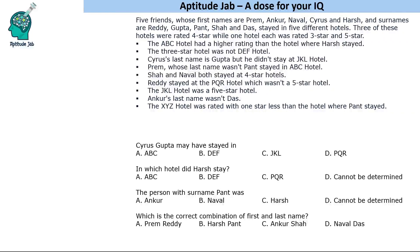Hello everyone, welcome to Aptitude Jab. This is a grid-based puzzle. There are five friends with first names and surnames given — these are not in the same order. They stayed in five different hotels: three were rated four stars, one was rated three star, and one was rated five star. We are given certain conditions about these hotels and the people, and we have to match all these things.